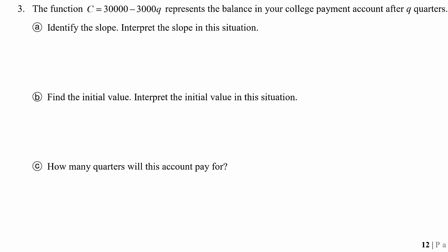Continuing our work with word problems that involve the use of slope and slope-intercept form, we have this function C, which equals 30,000 minus 3,000Q, and it represents the balance in your college payment account after Q quarters.